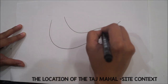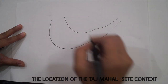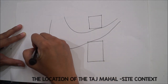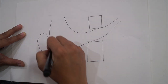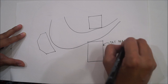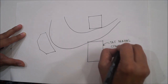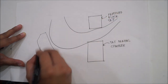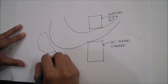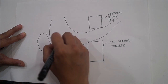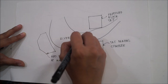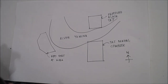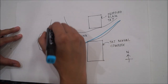The location of the Taj Mahal is along the bend of river Yamuna. On one side of the river Yamuna, we find the Taj Mahal. On the opposite side is the proposed black Taj. At the bend of river Yamuna, we find the Red Fort at Agra. The orientation of the Taj Mahal is along the east-west and north-south directions — perfectly aligned.